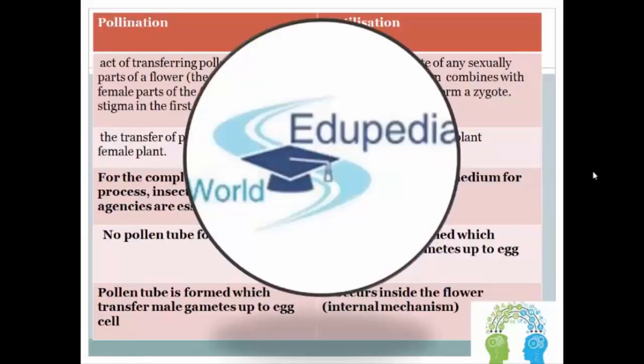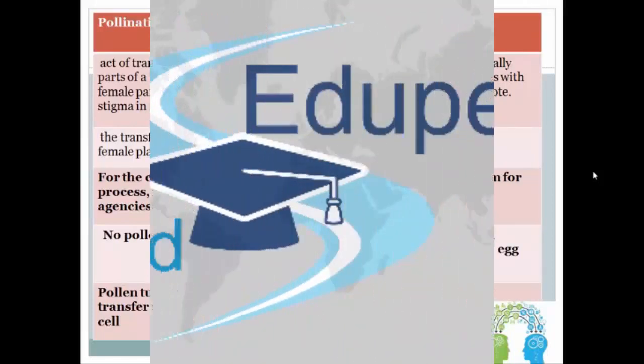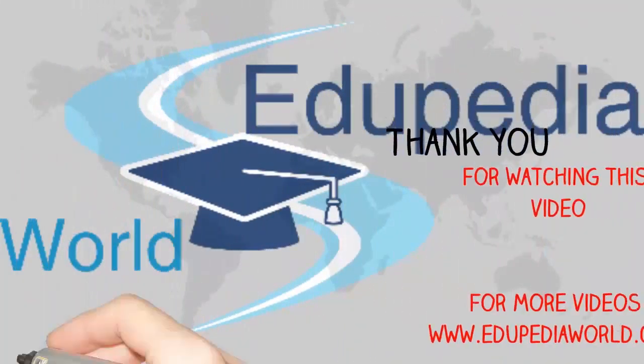So, that is the difference between these two processes — pollination and fertilization.